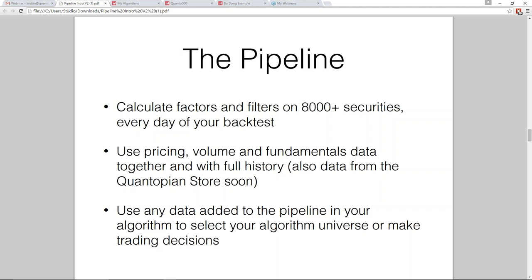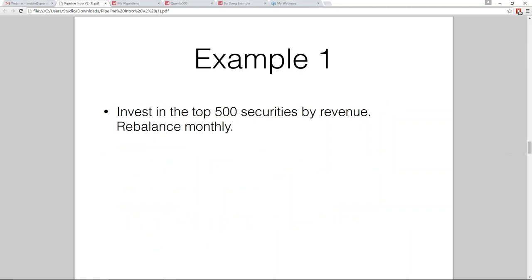Let's dive into the first example. This is a simple example just to show the idea of the Pipeline API — not a full long-short equity strategy. We're going to get all the securities in our universe, rank them by revenue, invest in the top 500 securities by revenue, and rebalance monthly.